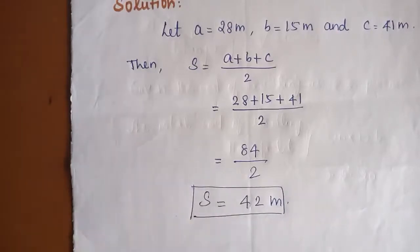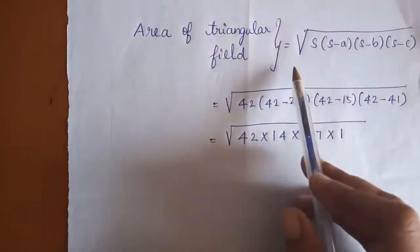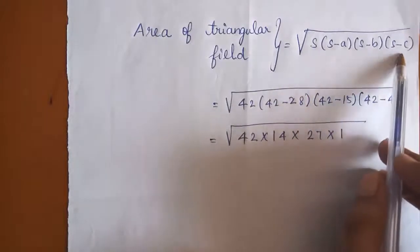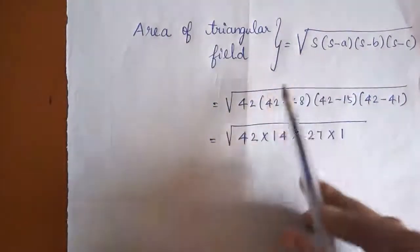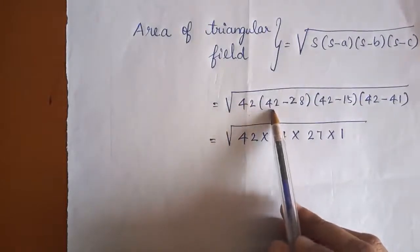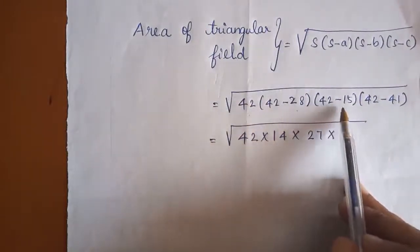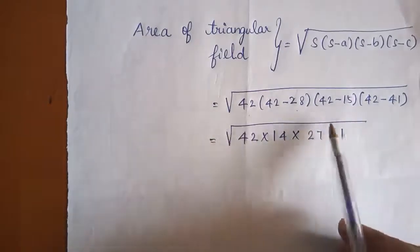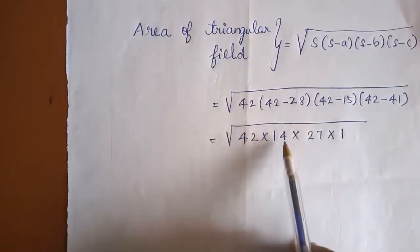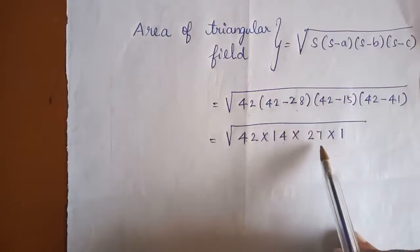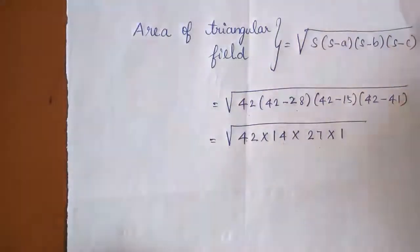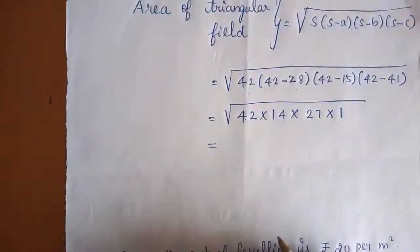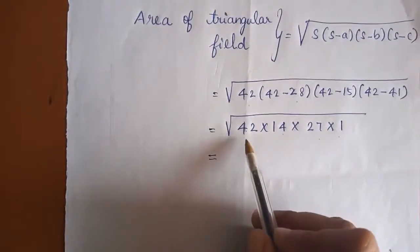Now we find the area of the triangular field using Heron's formula: area = root of S(S−A)(S−B)(S−C) = root of 42 × (42−28) × (42−15) × (42−41) = root of 42 × 14 × 27 × 1. We perform prime factorization: 42 = 2×3×7, 14 = 2×7, 27 = 3×3×3.